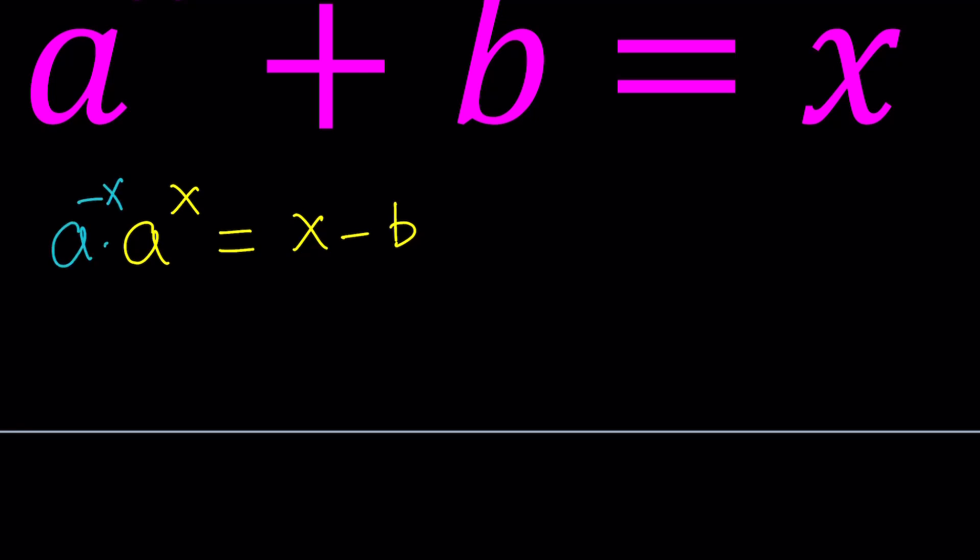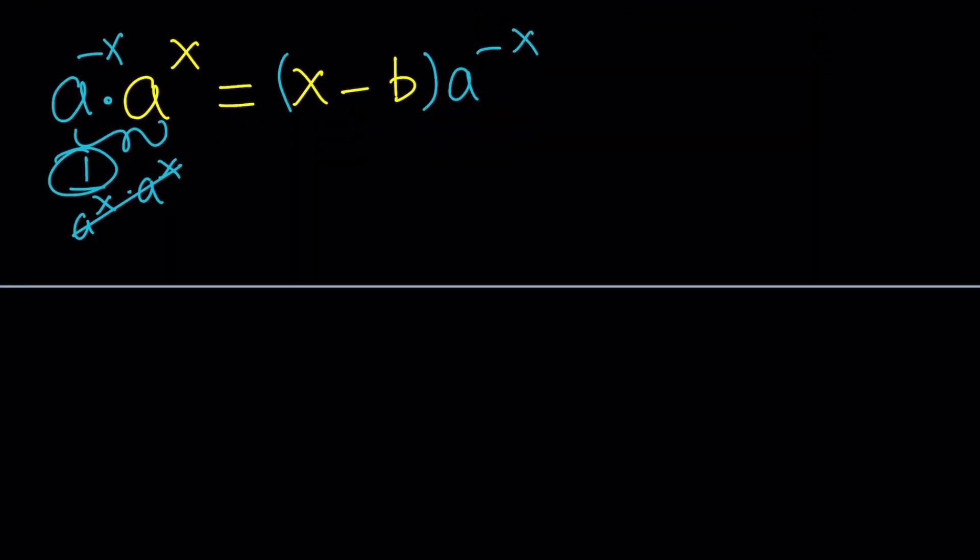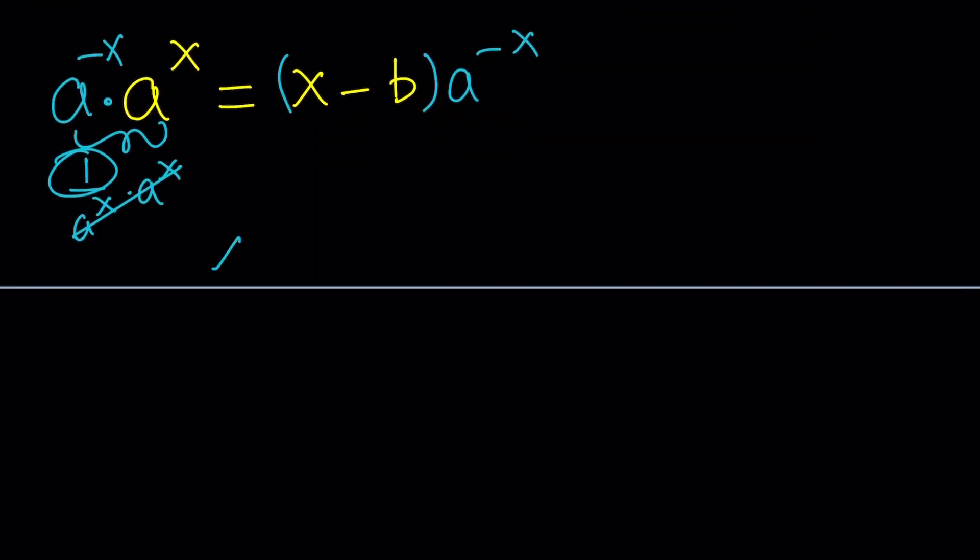And when you do that, what happens? Multiply by a to the power negative x on both sides. This becomes a to the power 0, and you hopefully know that this can be written as 1 over a to the x. And then these two cancel out, leaving us with 1, which is the same thing as a to the power 0, as long as a does not equal 0. And we already talked about it. So now we get the following: x minus b multiplied by a to the power negative x equals 1. Awesome. We wanted to bring the x and the exponential together, and we did.